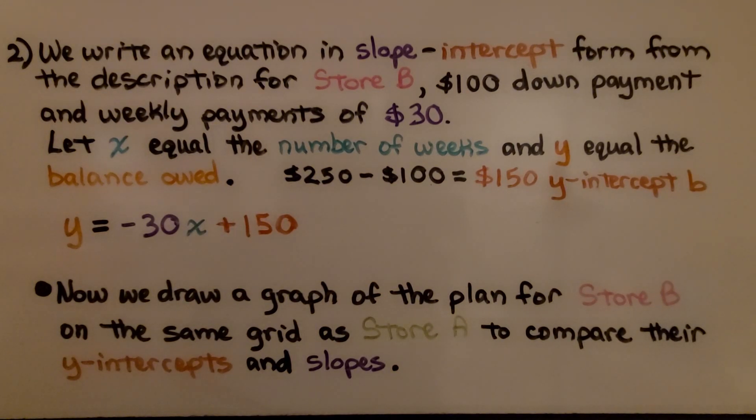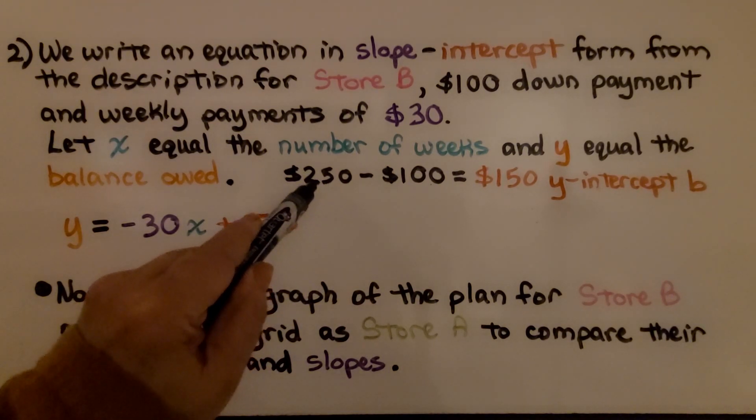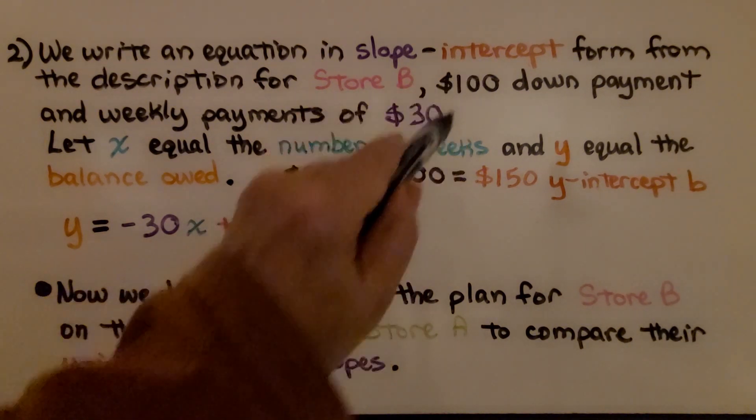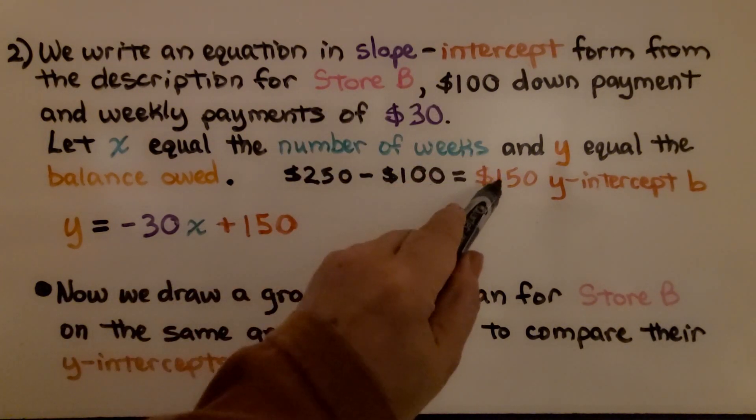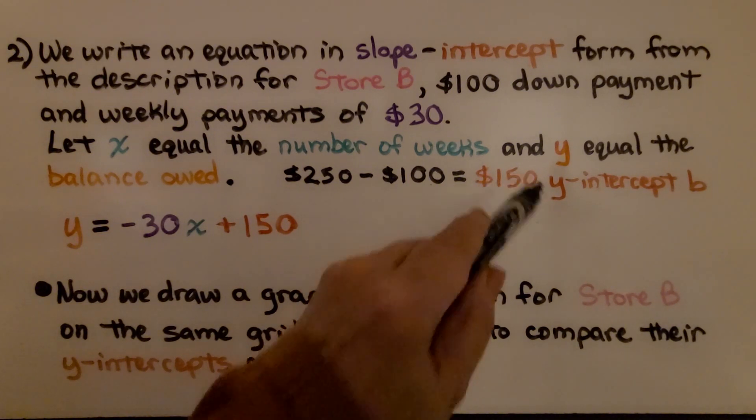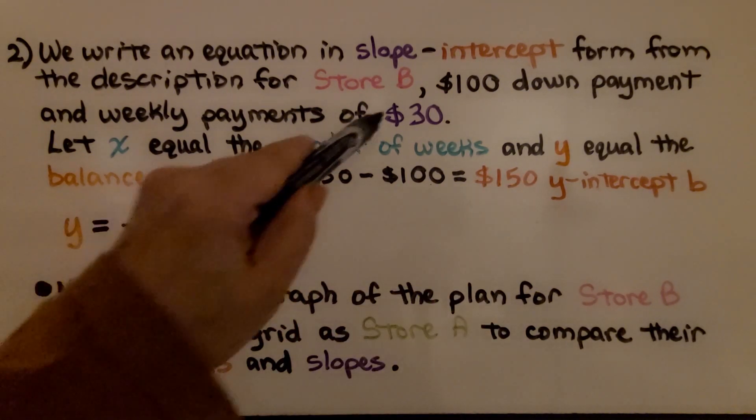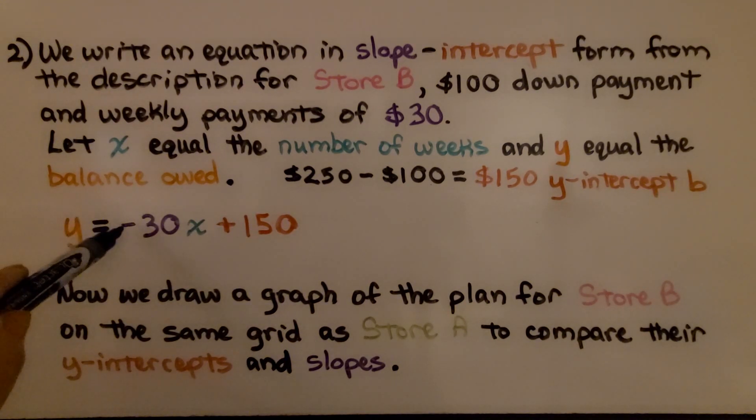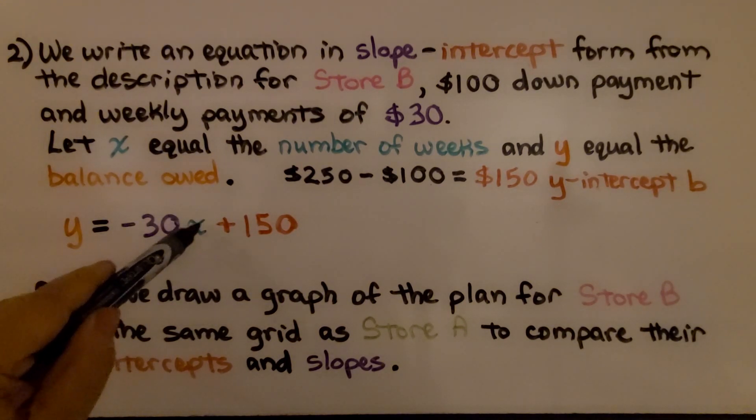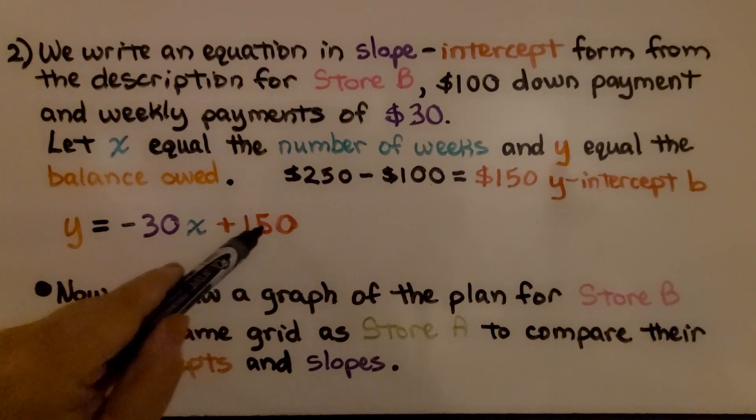Now that we have our equation for store A, we write an equation in slope-intercept form from the description for store B, $100 down payment and weekly payments of $30. We let x equal the number of weeks and y equal the balance owed, just like we did before for store A. The power washer costs $250 with a $100 down payment, so the y-intercept B is $150. Our equation, because of the $30 payments, is y equals negative 30x plus $150.